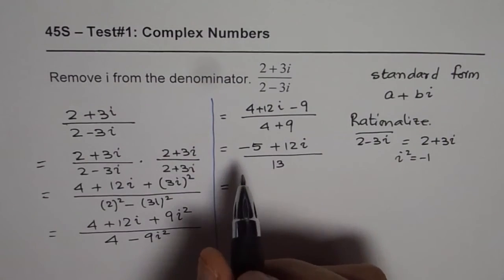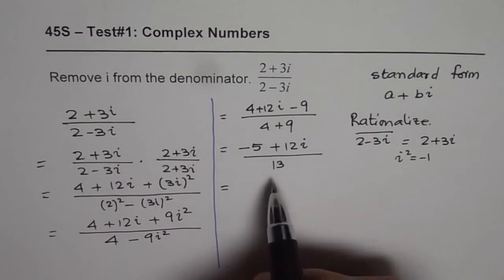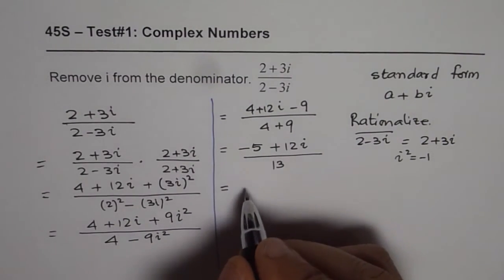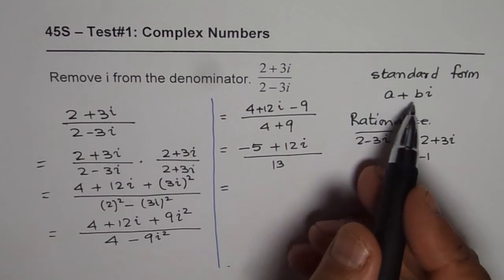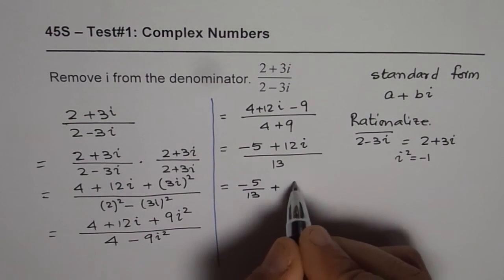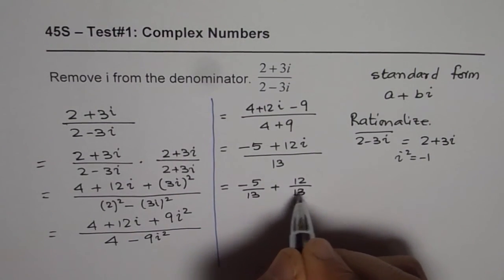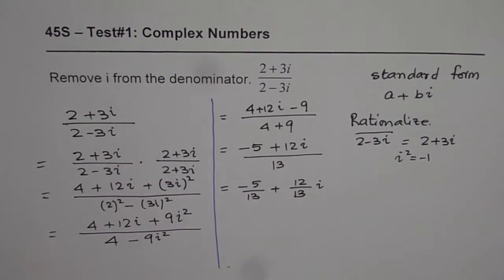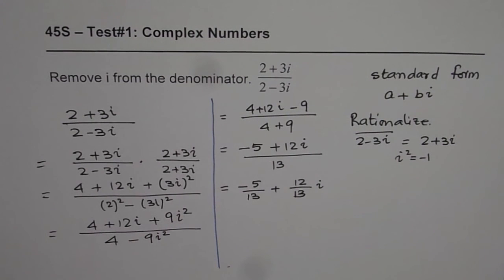Now we can write it without i in the denominator. There is no i in the denominator. Let's write it in standard form, a plus bi. So we get minus 5 over 13 plus 12 over 13i. So that is our answer, and that is how you should be doing it. Thank you.